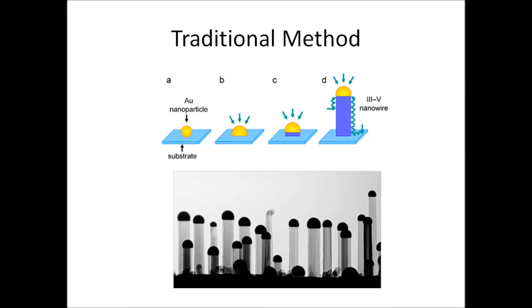They have a piece of gold stuck to the top. These gold nanoparticles are difficult and expensive to remove while keeping the rest of the wire intact, so it would be much easier if we could just grow the wires without them.